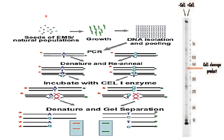In the TILLING procedure, seeds of interest are first selected and incubated in ethyl methyl sulfonate (EMS) for a particular period of time. These seeds are then sown up to the M4 generation. Since the seeds are mutated, we call each generation M1 through M4 instead of F1/F2. High-yielding plants or seeds from M1 to M2 generation are pooled.